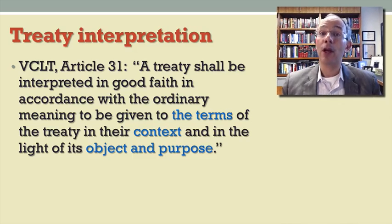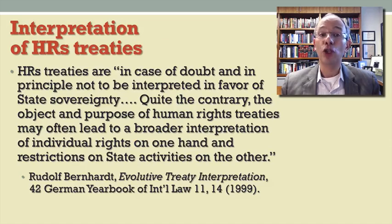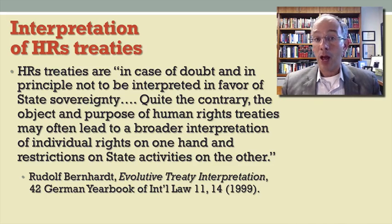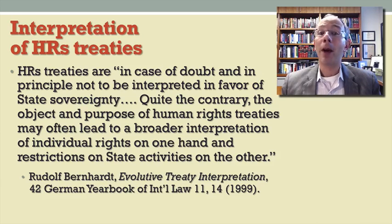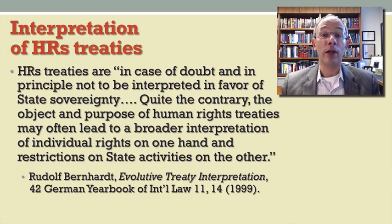When it comes to human rights treaties, one of the goals and purposes is obviously to protect the fundamental rights of individuals. Many international bodies — courts, treaty bodies, review bodies — have adopted what you might call a progressive or evolutionary approach to treaty interpretation. A former judge of the European Court of Human Rights has written that in cases of doubt or uncertainty, the treaty should not be interpreted in a way that favors state sovereignty, but rather the object and purpose might lead to a broader interpretation of individual rights and a greater limitation on state authority. This is a fairly well-settled principle, but it has produced some controversies in specific cases we will discuss in coming weeks.